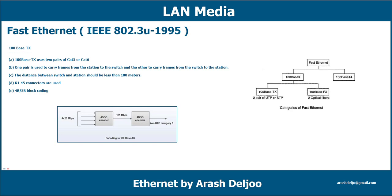This is why three substandards have been proposed for 100 Mbps: 100Base-X, which includes 100Base-TX and 100Base-FX, and also 100Base-T4. I will explain each of them.